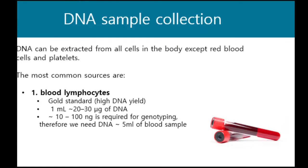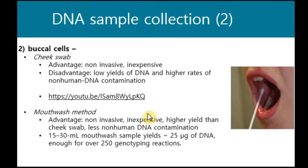When obtaining a blood sample, the DNA comes from blood lymphocytes. It is the gold standard with a high DNA yield, and one milliliter of whole blood may contain about 20 to 30 micrograms of DNA. A sample of three to five milliliters of blood is usually enough for genotyping. DNA can also be collected from buccal cells, either from a cheek swab or using the mouthwash method.